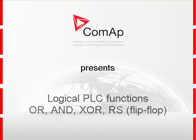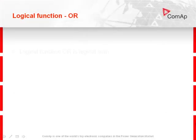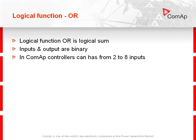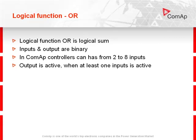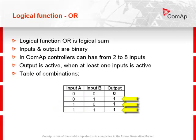COMAP presents logical PLC functions OR and XOR. Logical function OR is a logical sum. Inputs and output are binary. In COMAP controllers it can have from 2 to 8 inputs. Output is active when at least one input is active. In the table of combinations you can see that at least one active input causes an active output.